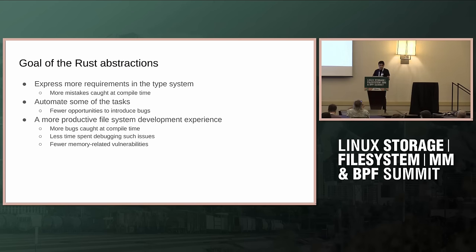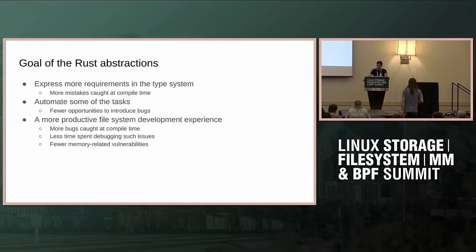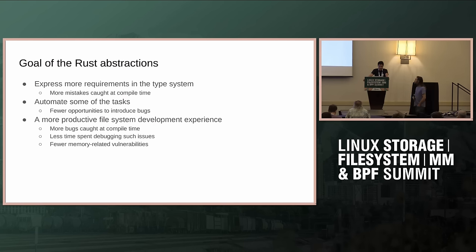A little bit about the goals of the abstractions — why we're doing this work of building these abstractions in Rust. Basically in Rust, we have the ability to express more of the intent of the code, or the requirements that the code has, in the type system, and this allows us to catch more bugs at compile time. It also allows us to automate some tests that are not very easily automatable in C. The result of these two things is that we have a more productive developer experience when writing file systems in Rust or code in general.